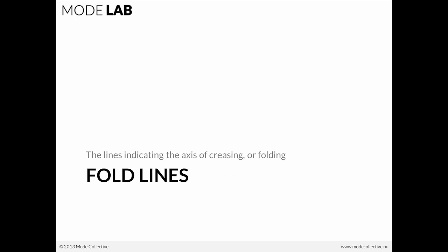When we're talking about paper folding, we're talking about quite a few different basic components. The first one is fold lines. The lines which indicate the axis of creasing or folding are referred to as fold lines.